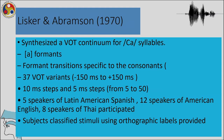The Lisker and Abramson experiment first showed a synthesized VOT continuum for consonant-vowel syllables, where a stable state formant region for the vowel was selected and formant transitions related to the consonants were added. 37 VOT variants were given to participants to hear, with 10-millisecond steps as well as 5-millisecond steps. Speakers of Latin American Spanish, 12 speakers of American English, and 8 speakers of Thai participated. Subjects classified stimuli using orthographic labels, as in forced identification experiments.